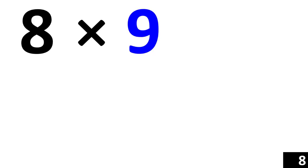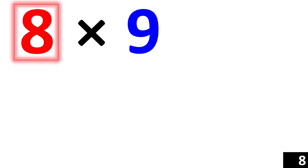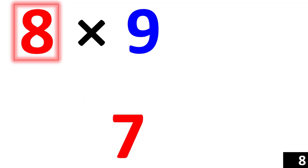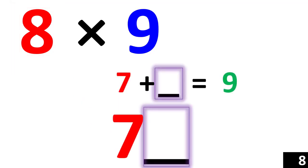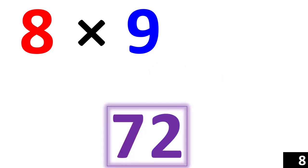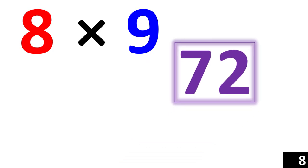The next example is 8 times 9. Starting from the number 8, 1 less than 8 is 7. So, 7 is your first number. Then we say, 7 plus what number would give us 9? 2. Therefore, 72 is your answer.